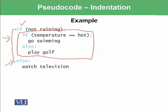So how it will perform? If there is raining, if not raining condition will be false and it will come over here and it will say watch television and sit at home and watch television. There is no need to go outside. However, if there is not raining, then it will check another if temperature is hot. If the temperature is hot, it will say go to swimming. And if the temperature is not hot, it's cool, then it will say play golf.